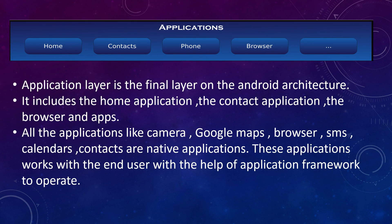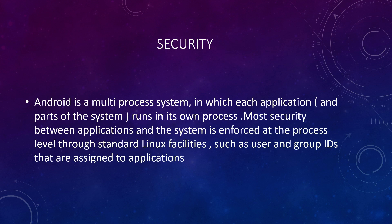The application layer is the final layer of the Android architecture. It contains the basic apps used for day-to-day use — home, contacts, phone, browser, camera, Google Maps, SMS, calendar, and other native applications that come pre-installed with the OS. These applications work with the end user through the application framework.